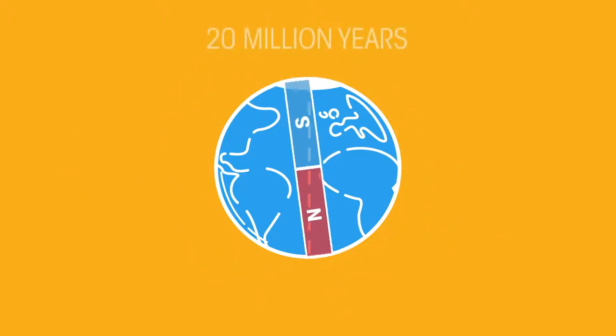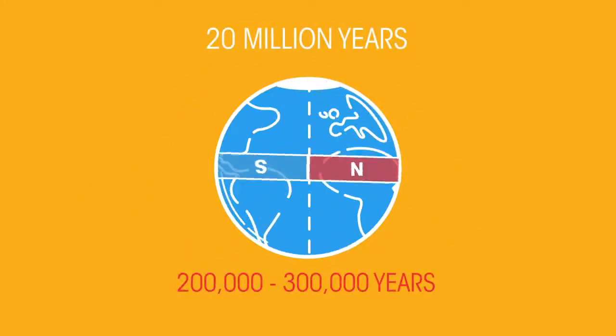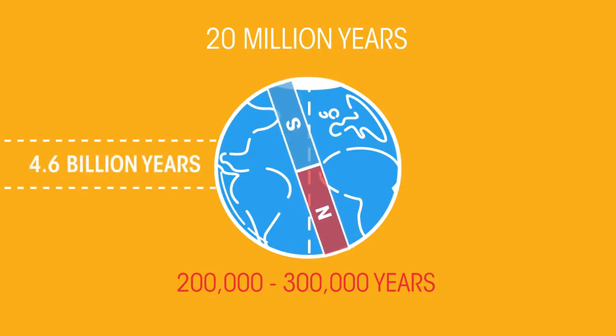In fact, in the last 20 million years, it has switched every 200,000 to 300,000 years, which is quite often considering how old the world actually is.